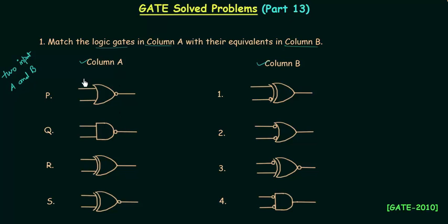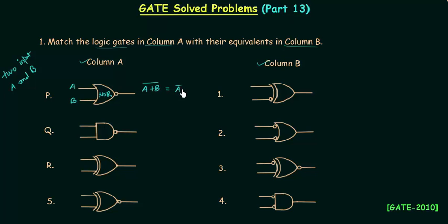We will start with column A. The first gate is a NOR gate with inputs A and B. The output is simply A OR B, all complemented. When you simplify this using De Morgan's law, you get A complement AND B complement.